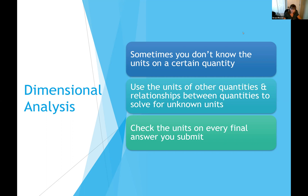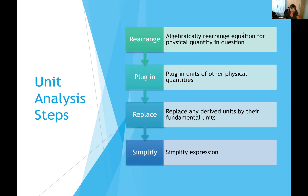The steps to perform dimensional analysis: first, algebraically rearrange your equation to solve for the physical quantity you're investigating. Once you've done that, with that quantity on the left-hand side and all other quantities on the right-hand side, plug in the units of all those known quantities — replacing the symbols with their units.